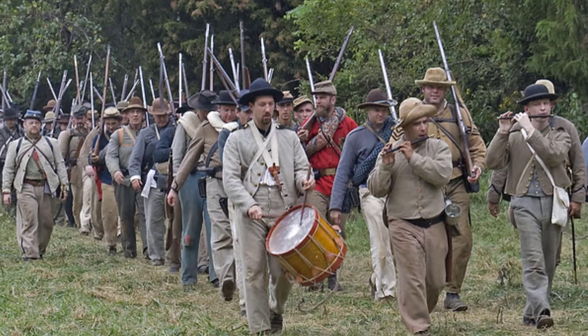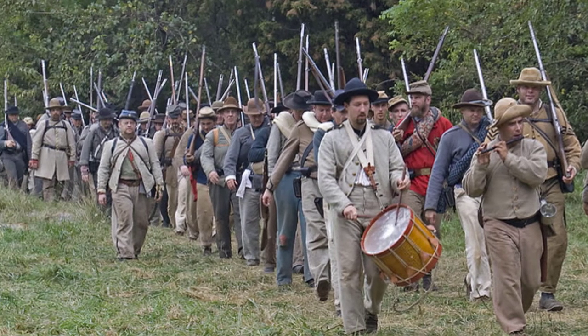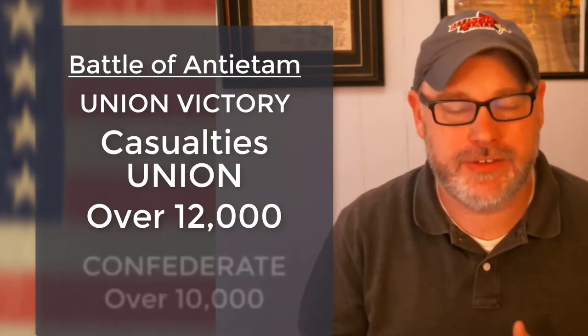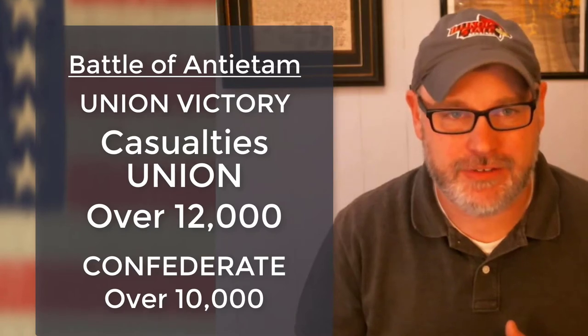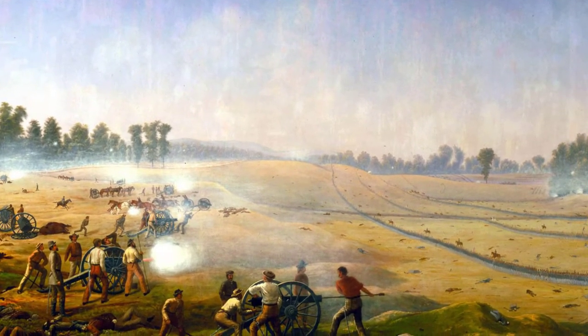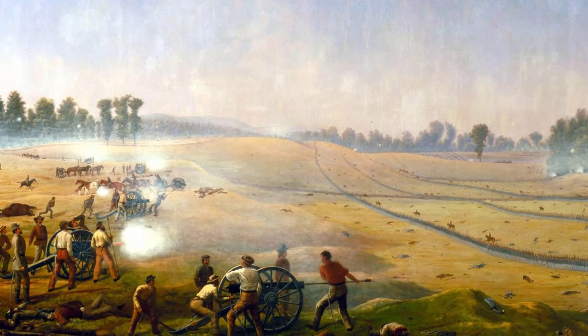By the end of the day, the battle was essentially a stalemate — neither side truly took the battlefield. The Union claimed victory, however, because Lee and his weakened army began to march back toward Virginia, unable to continue the campaign. The Union suffered over 12,000 casualties — killed, wounded, or missing — and the Confederates over 10,000, totaling 22,000 casualties in a single day of fighting, making it the bloodiest day of the Civil War and in American history.